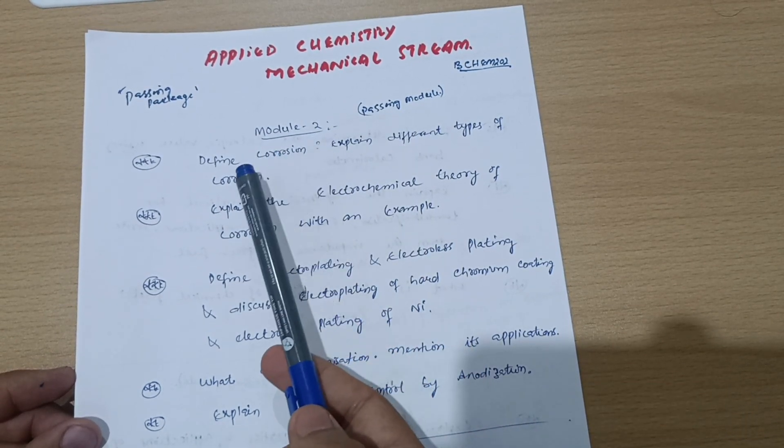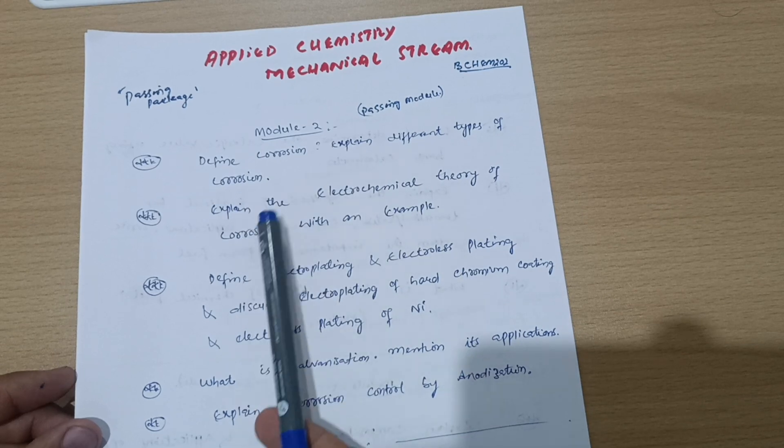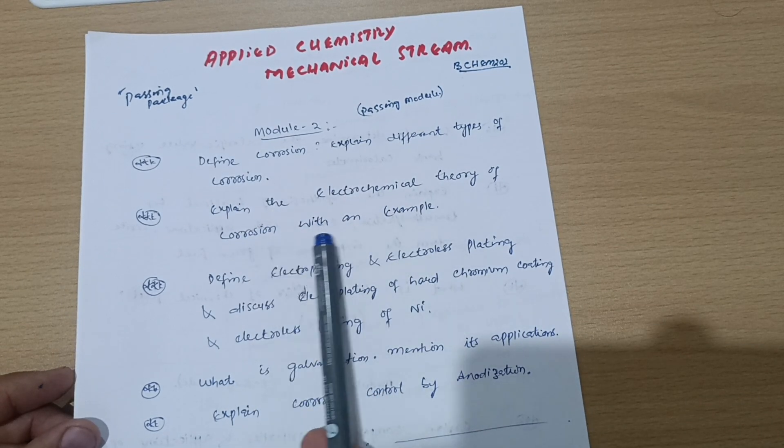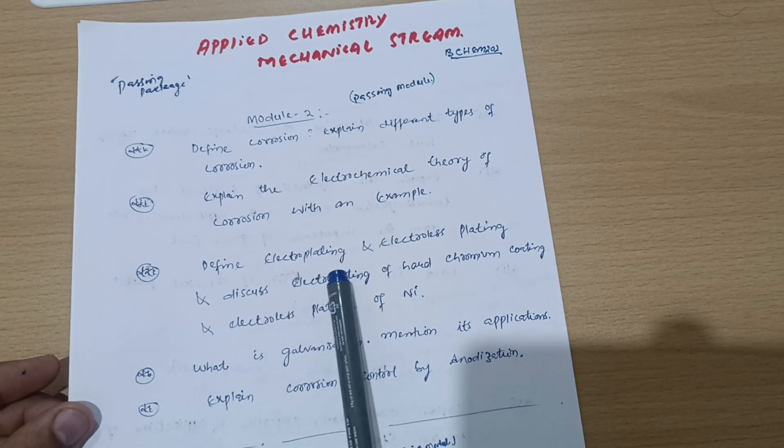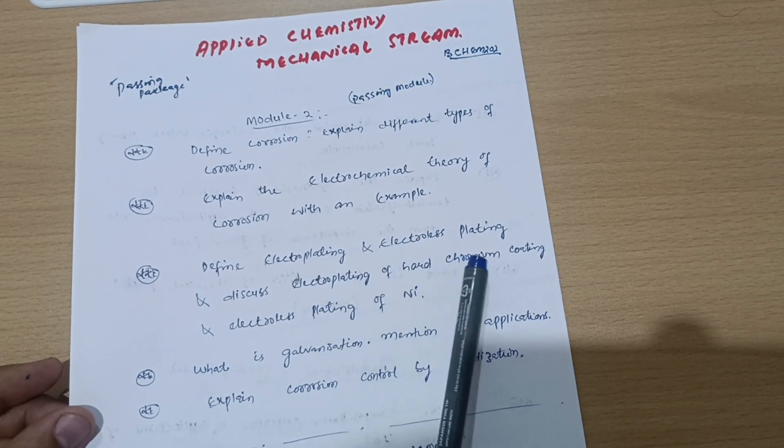Particularly, this is for regular stream students. Let me discuss here first passing module, that is Module 2, in which you have to cover five questions. Define corrosion, explain different types of corrosion, and explain the electrochemical theory of corrosion with an example.